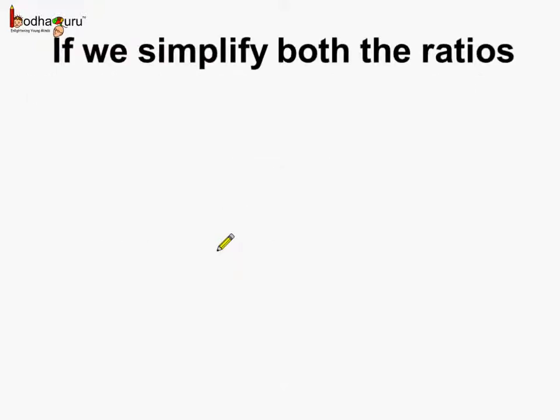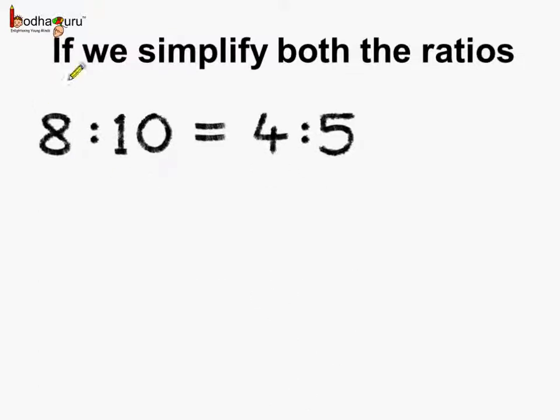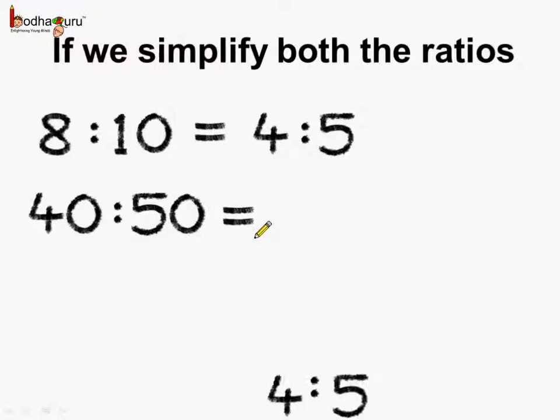Now if we simplify both the ratios what do we get? We get 8 is to 10 is equal to 4 is to 5 by dividing them by 2. 2 times 4 is 8 and 2 times 5 is 10. Next coming to the next ratio, 40 is to 50. Here again we can divide by 10 and what do we get? We get 4 is to 5.